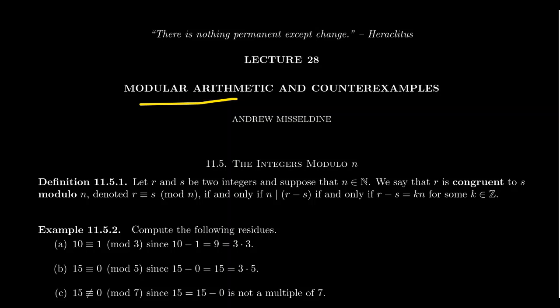In previous lectures in this series, we've already introduced the notion of relations — that is, how we can compare things together using Cartesian products. In particular, we introduced the important notions of equivalence relations and partial orders. As we draw near the end of our relation unit, we introduce this important relation about modular congruence on integers, and we'll do more with this in lecture 29 as well.